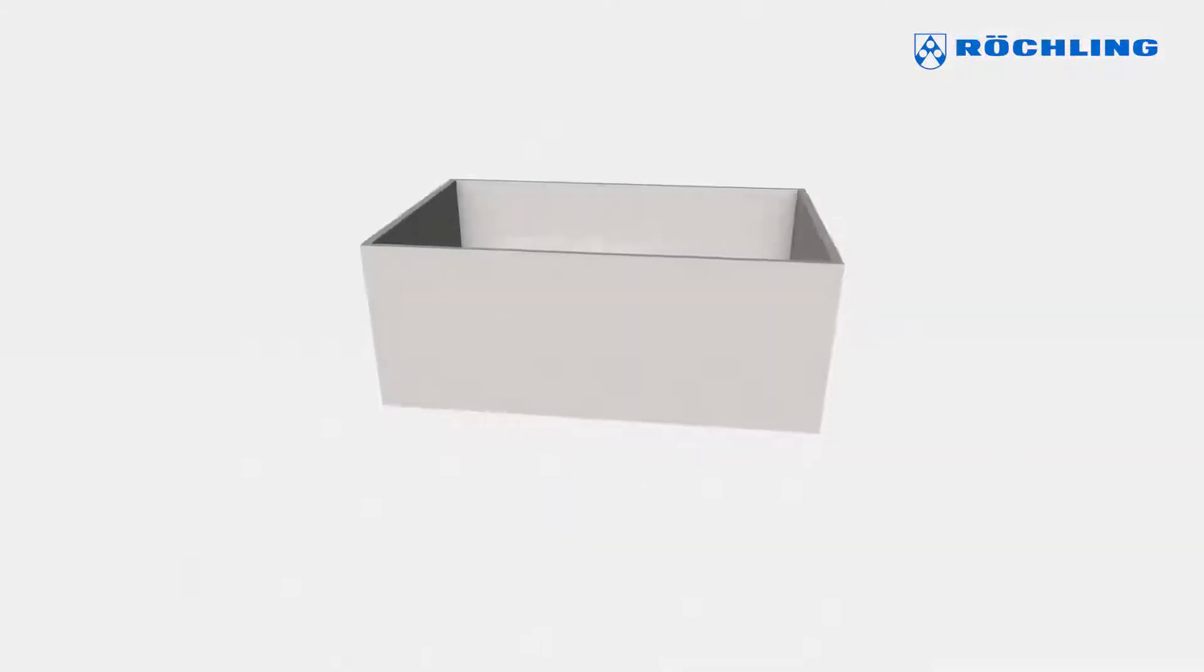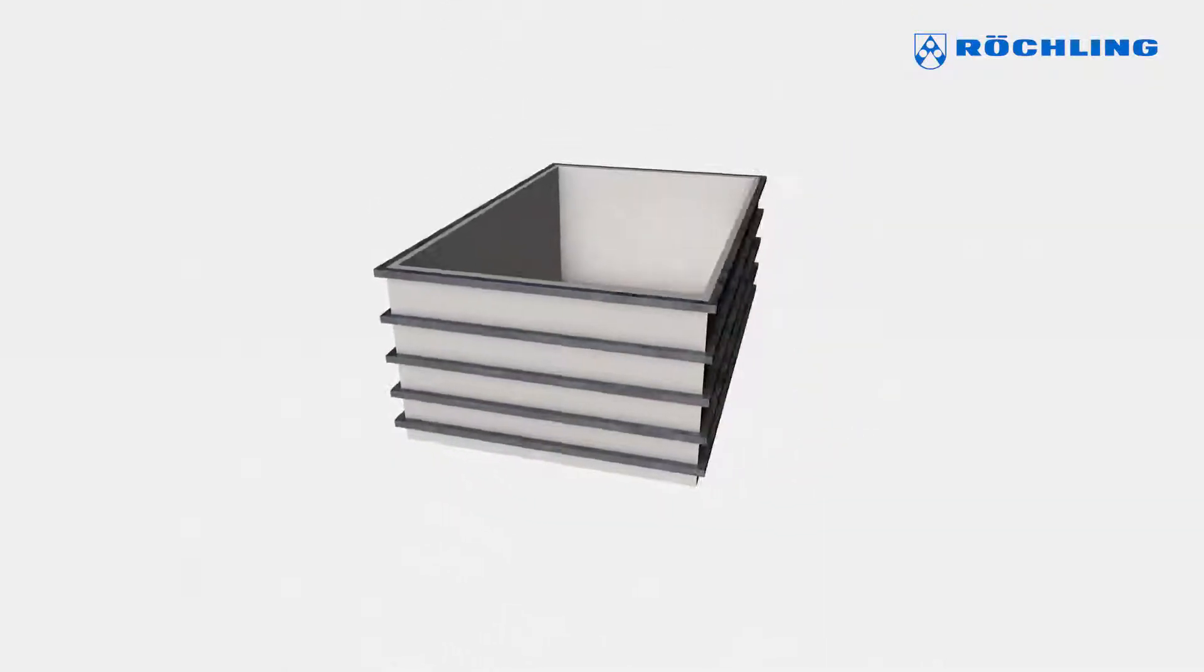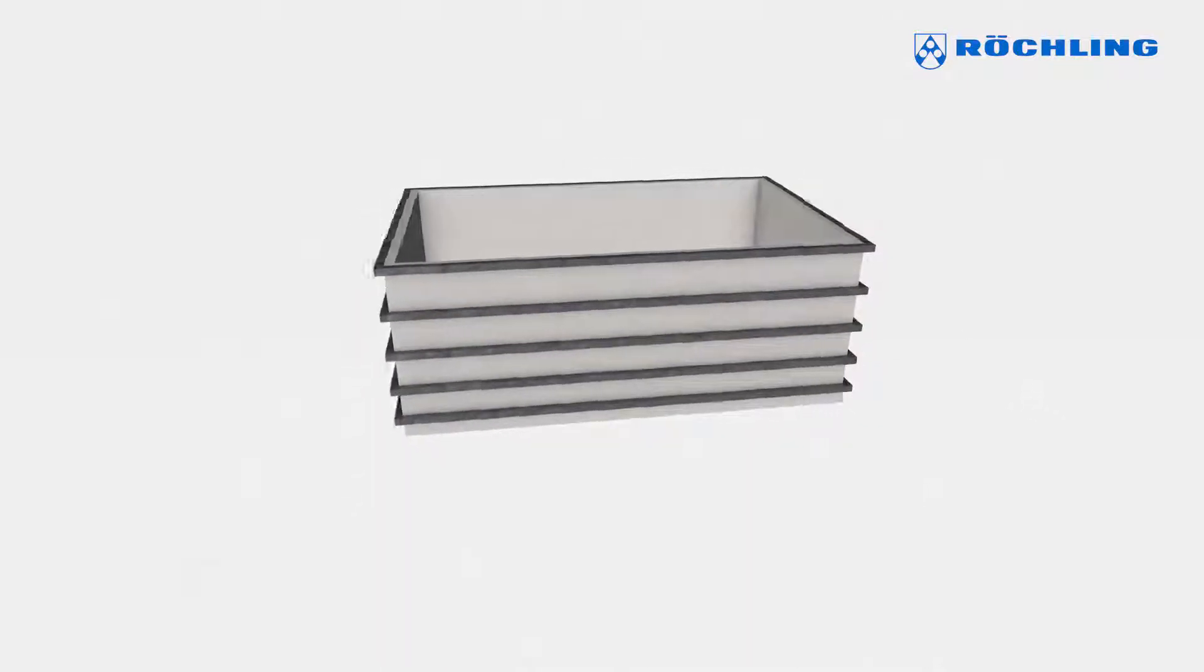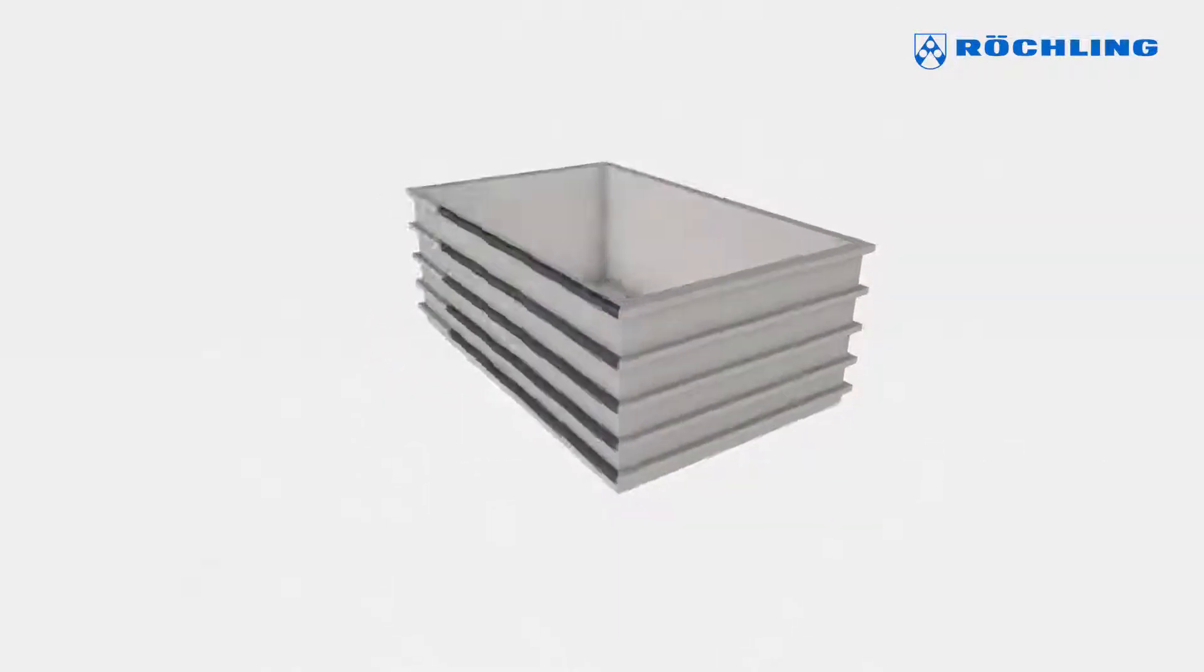Plastic tanks of conventional design made from solid plastic sheets usually have to be supported by a number of steel profiles. In chemical environments, these steel profiles have to be protected against corrosion by elaborately encasing them in plastic profiles.